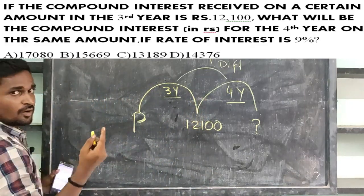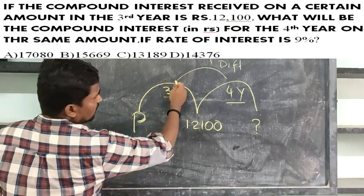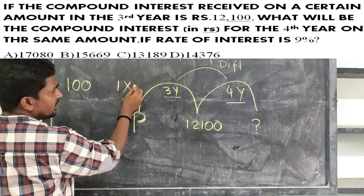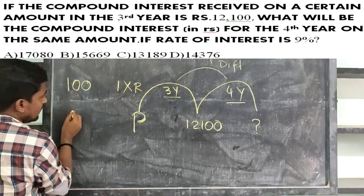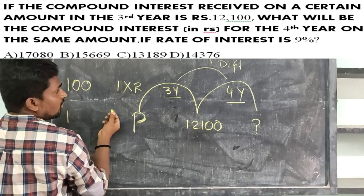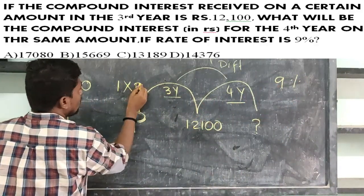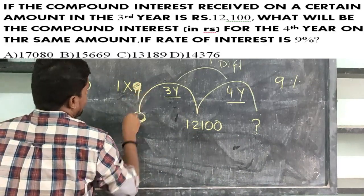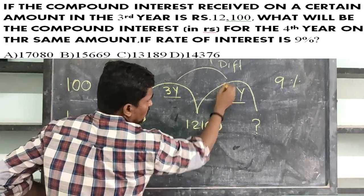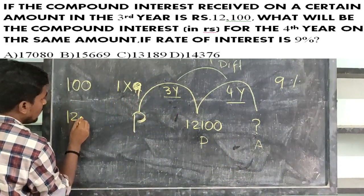I will tell you about this in the video. I am going to add 100 rupees, 1 verse. If you have a 340 difference, I know the rate of interest. I am going to apply 9% rate of interest.